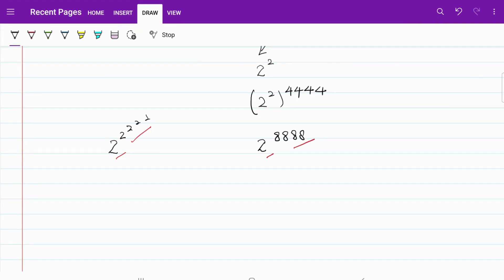Let me first copy down the exponents on both sides. On the left, I have a series of 4 twos. And on the right, I have the number 8,888. These are the two numbers that we are trying to compare.